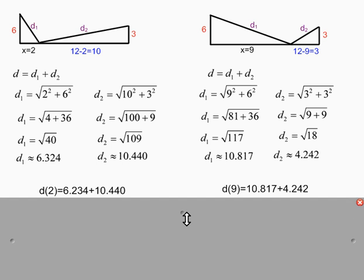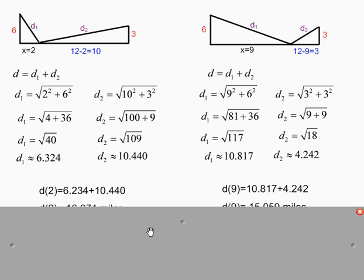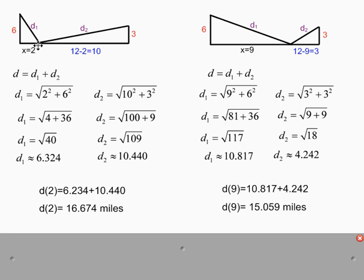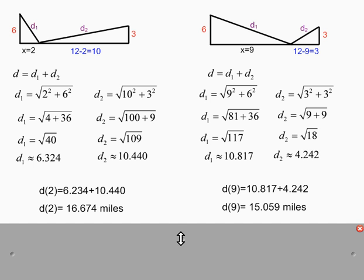I add those together with approximations and find that if I chose to build the road two miles from the start, it would take 16.674 miles of road to connect those two towns. If I choose to build the road nine miles from the start, it would require 15.059 miles. It doesn't seem like a significant difference, but building an extra 1.6 miles of road would cost lots of money and labor, lots of wasted resources. So the question becomes, where's the best place to build the road so that I can make that total distance as short as possible?